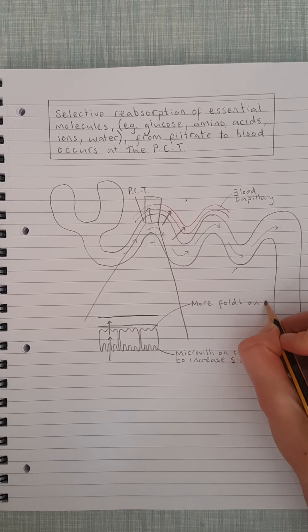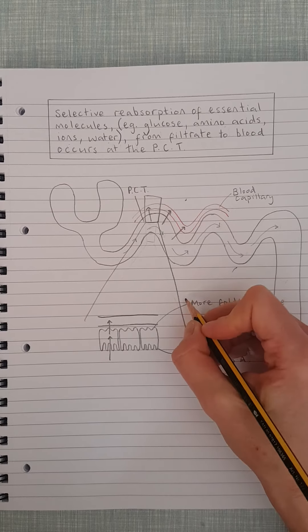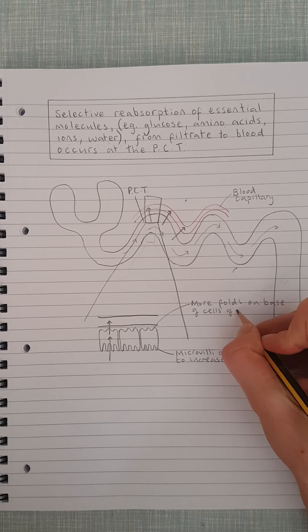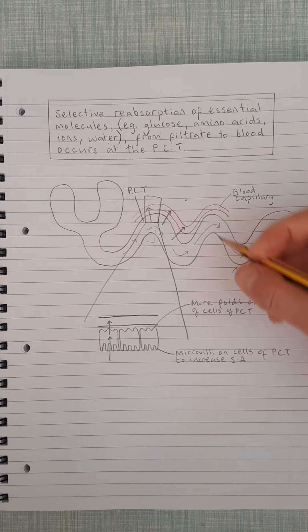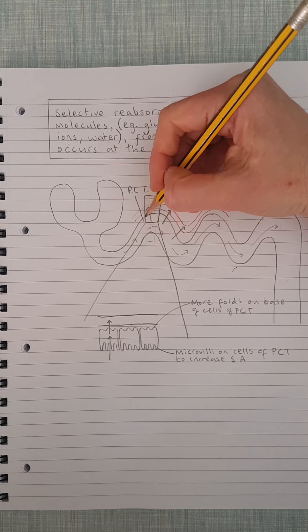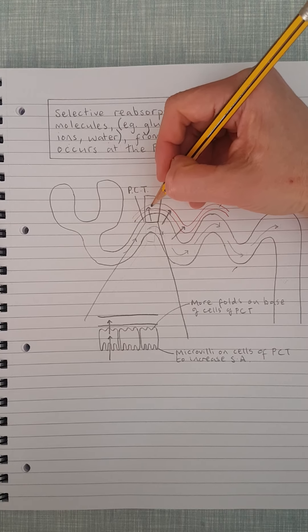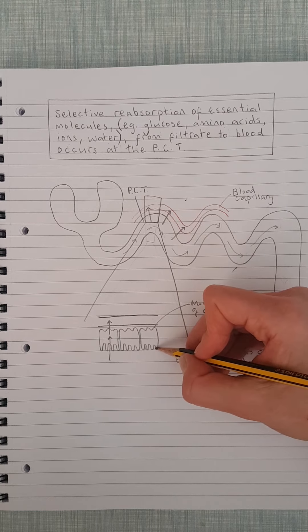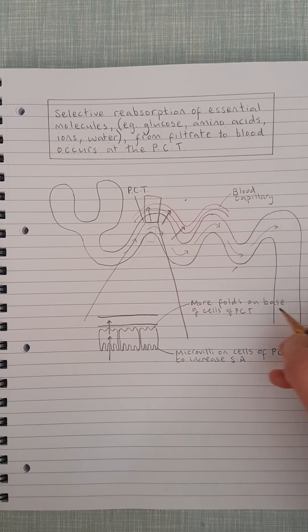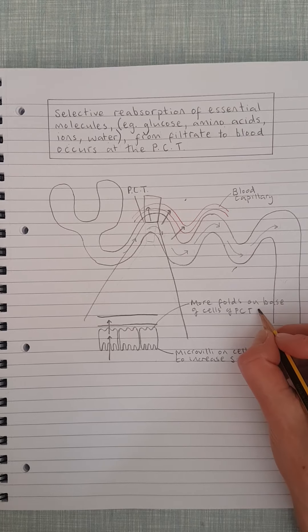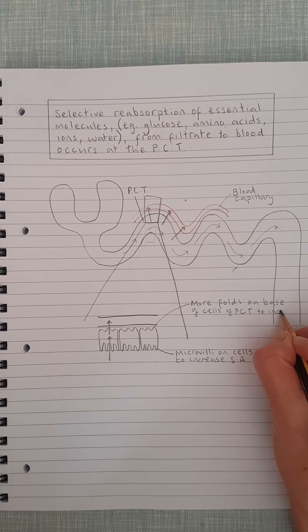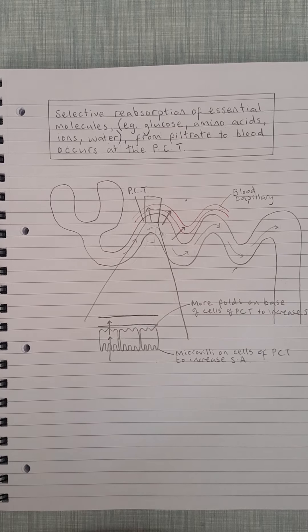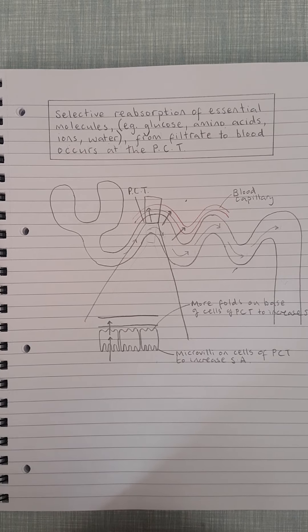On the base of the cells of the PCT. So let me just give you some context: that would be on the side of the capillary, and the microvilli are on the side of the filtrate. Okay, and they're also to increase surface area.